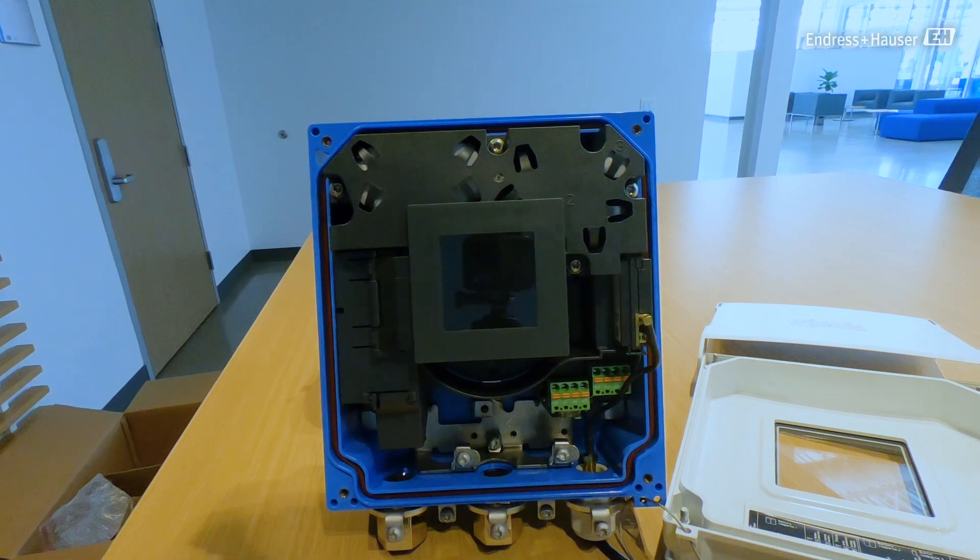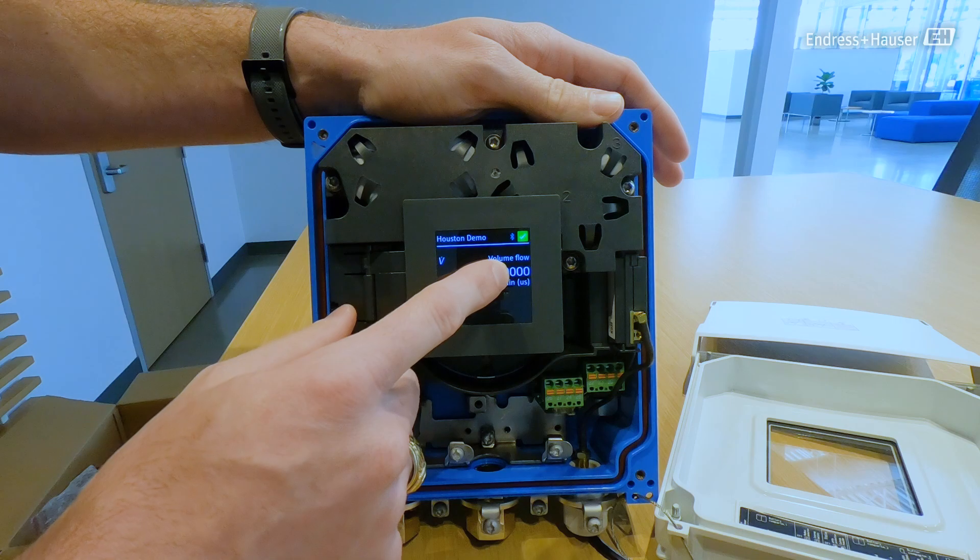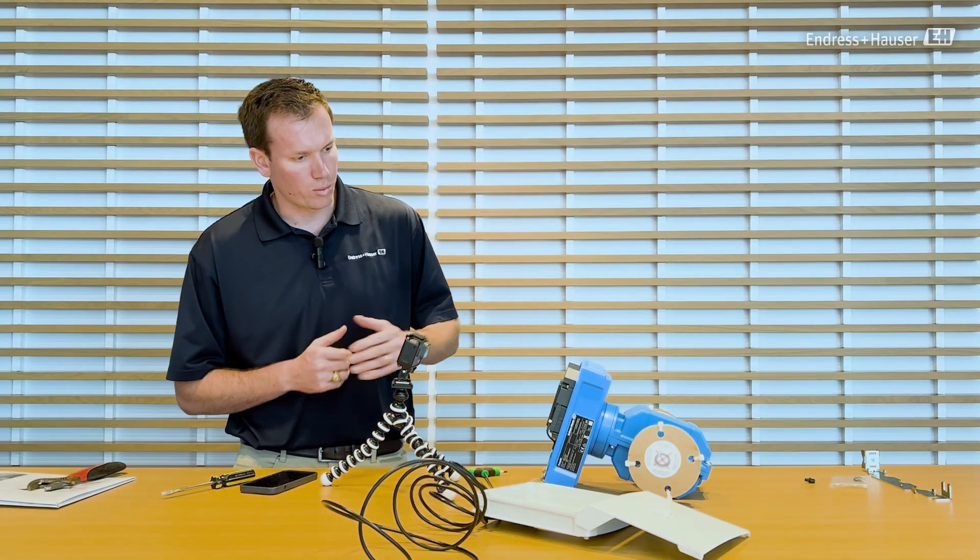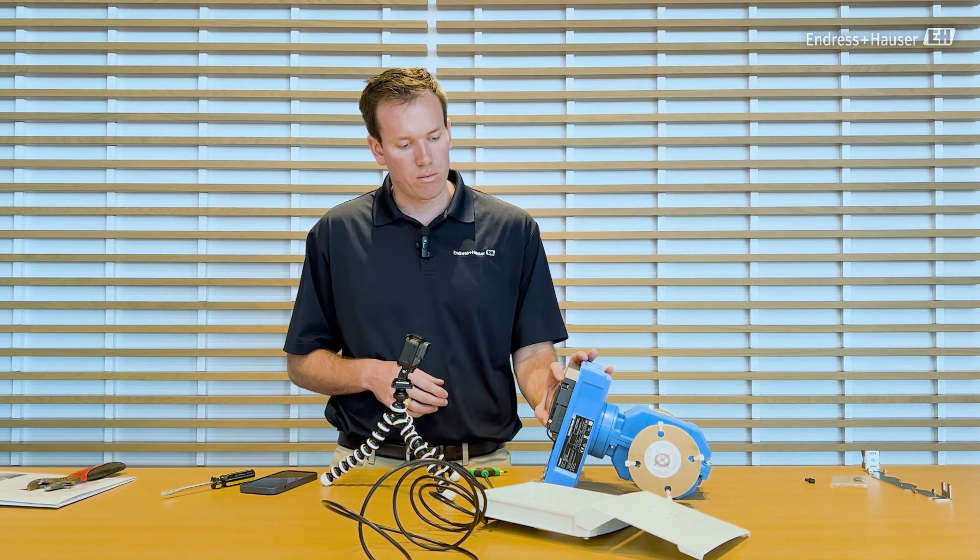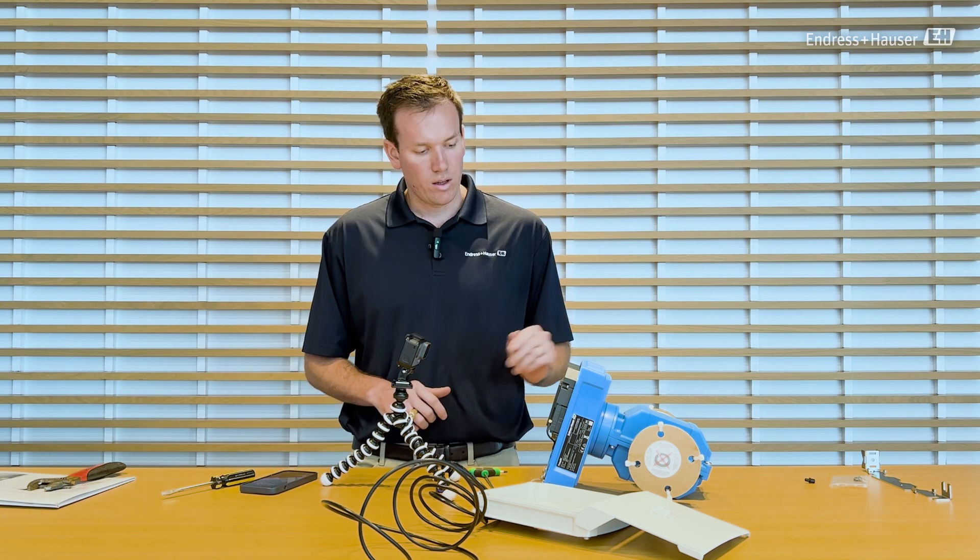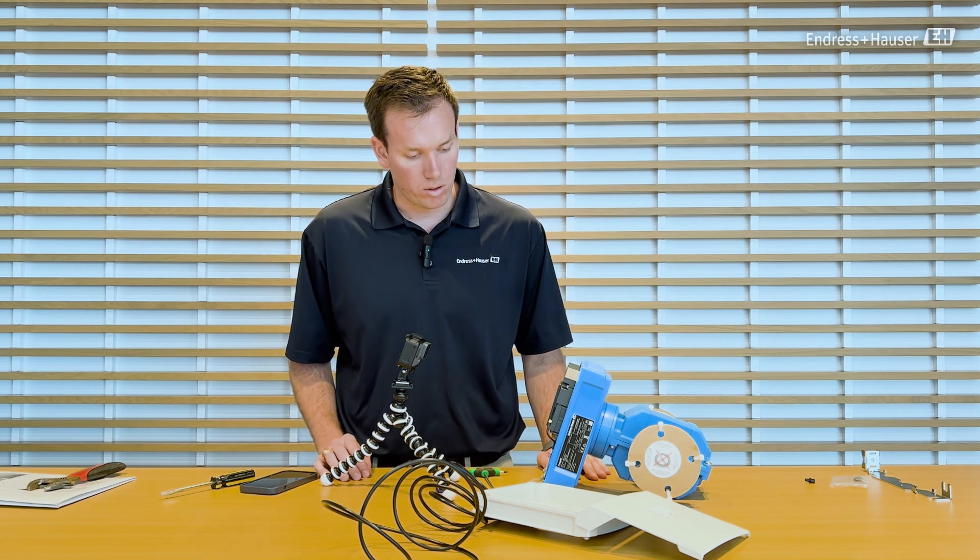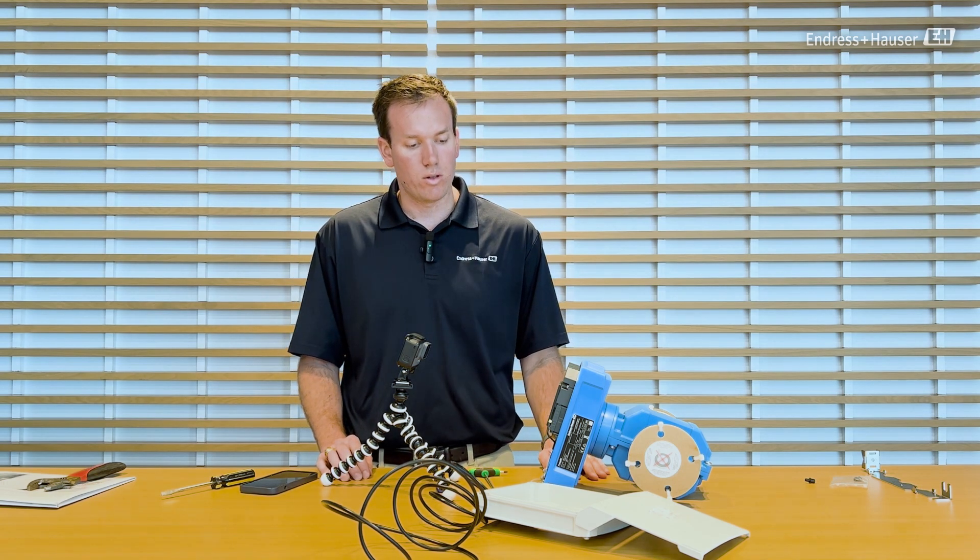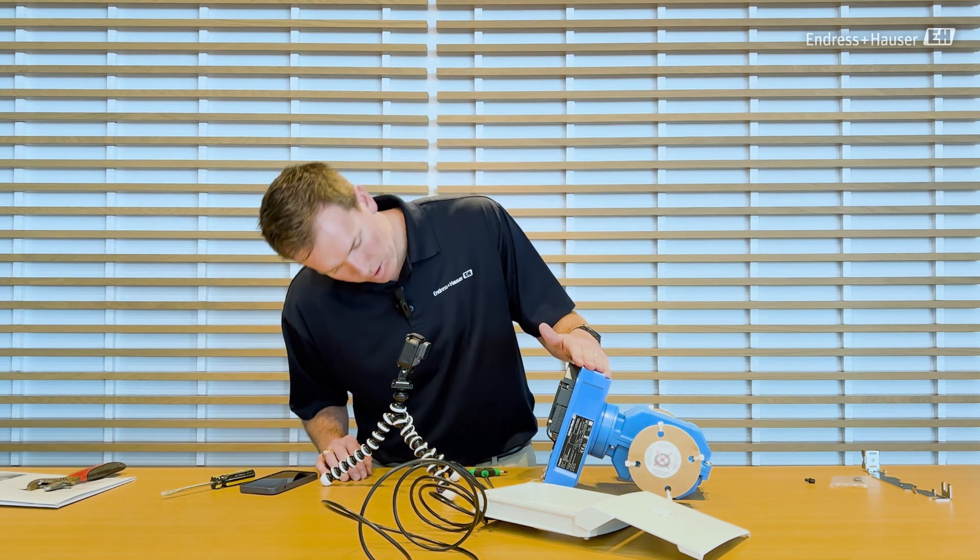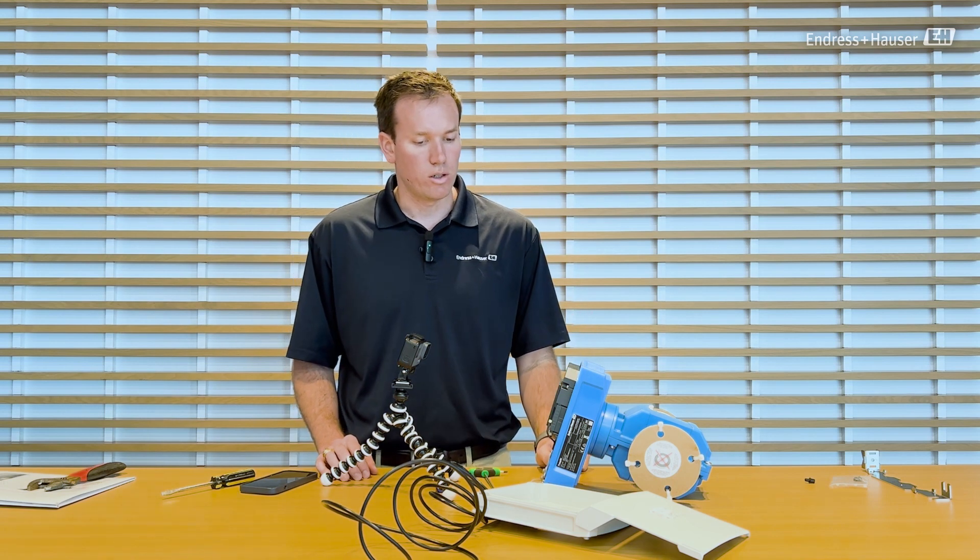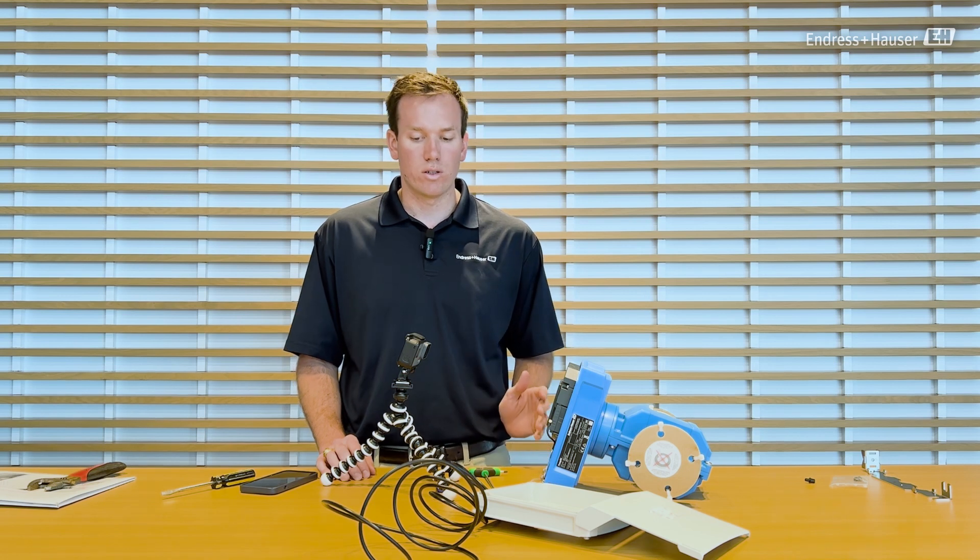The display of this ProMag meter has a touch screen. That touch screen is used to wake it up and show measured values. Normally it's not on, but all of your commissioning setup and interaction of the meter is done using Bluetooth connectivity. You can use a smartphone or tablet. Connect to it using the Enderson Hauser Smart Blue app, which is available on the iOS store or the Google Play and Android store. All of your commissioning is done that way. If you're using a laptop computer, you would need the device care software. The display stays off in normal operation to retain battery.